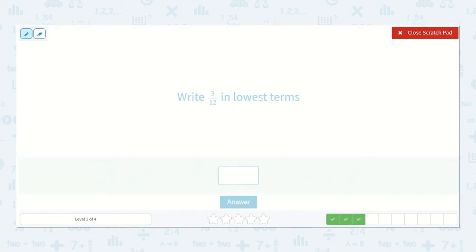3 twelfths. So write 3 twelfths in lowest terms. Well, I can see just by looking at this, I could divide the top and bottom by 3, because I know 12 is divisible by 3, and the largest number 3 is divisible by is 3. So 3 divided by 3 is 1. 12 divided by 3 is 4. So 3 twelfths is equal to 1 fourth.